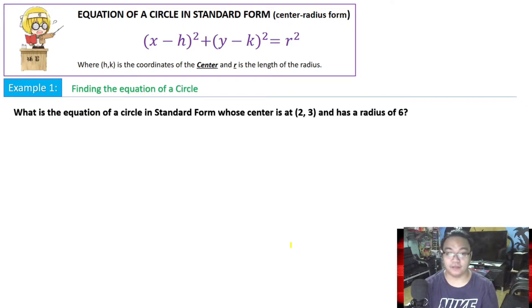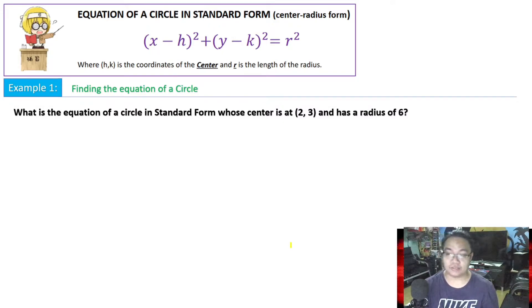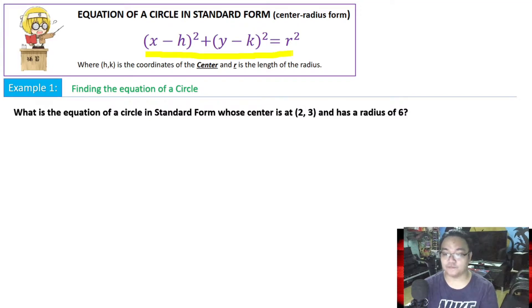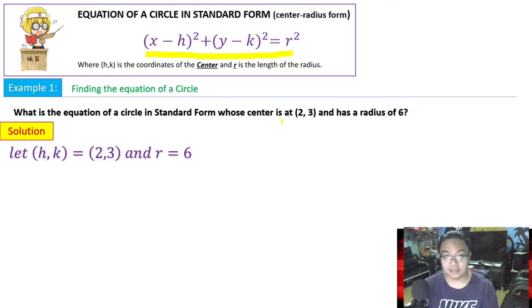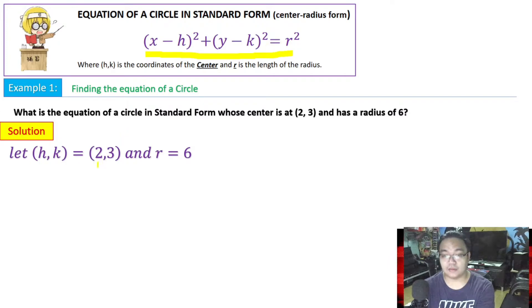Example 1: Finding the equation of a circle. What is the equation of the circle in standard form whose center is located at (2, 3) and has a radius of 6? All we have to do is follow the standard form and substitute our center and radius, letting h = 2, k = 3, and r = 6.